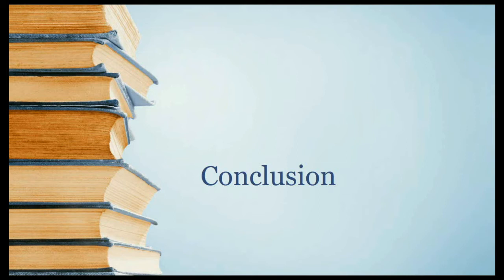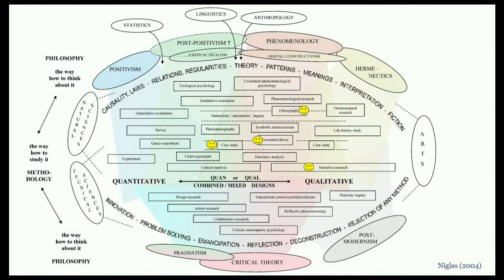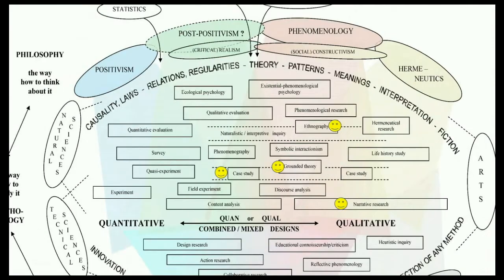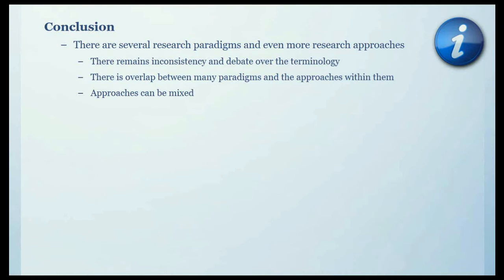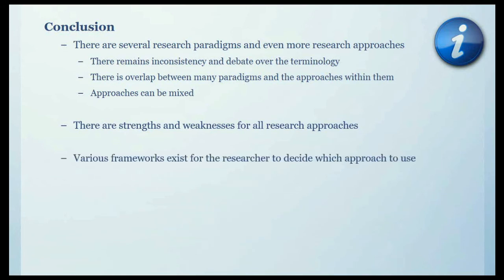I have now presented different research approaches and, as promised, we shall return to the diagram from Niglas, which I have now highlighted to show where the approaches I discussed lie. It is evident from my presentation and from this visualisation that whilst there are clear differences between them, there is also a degree of overlap and scope for mixing the various approaches. I have highlighted that there are several research paradigms and even more research approaches. There remains inconsistency and debate over the terminology, and there is overlap between paradigms and approaches within them. Furthermore, these approaches can be mixed. There are strengths and weaknesses of all the research approaches, but the light at the end of the tunnel is that there are various frameworks to help the researcher decide which research approach is best suited for their education research.